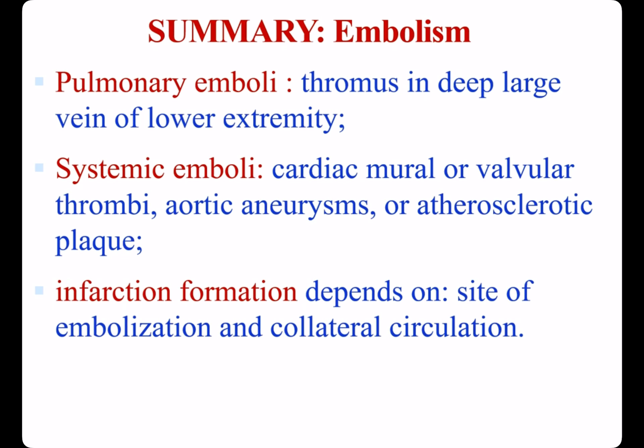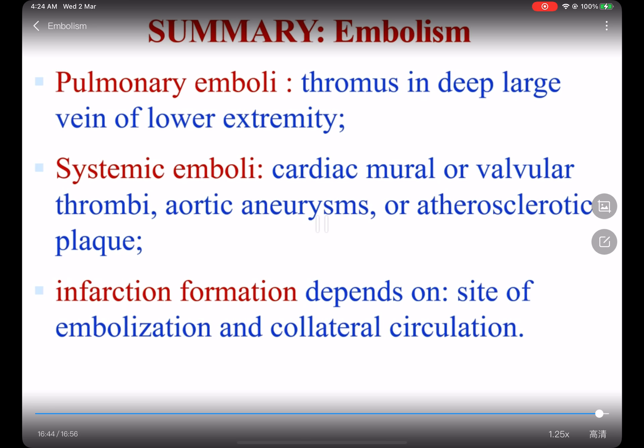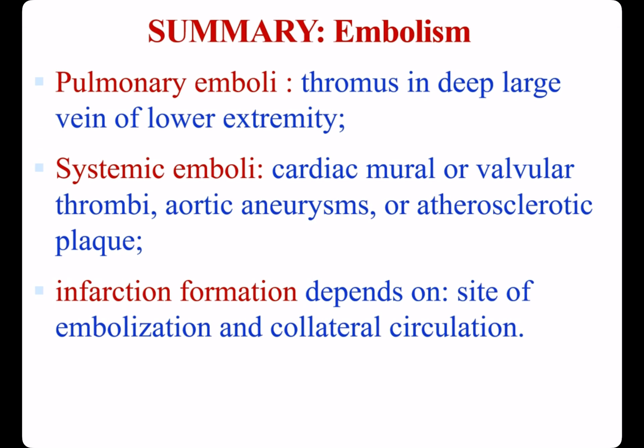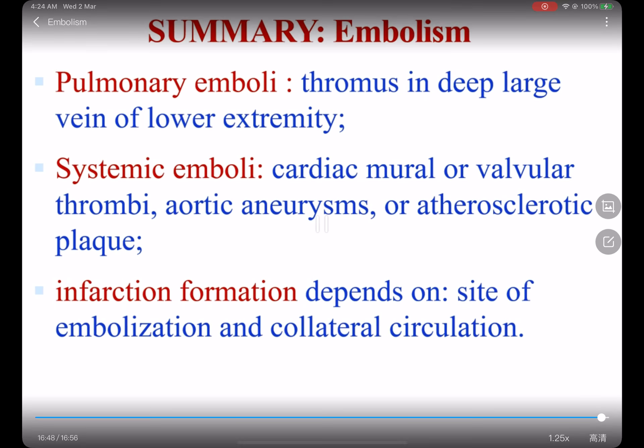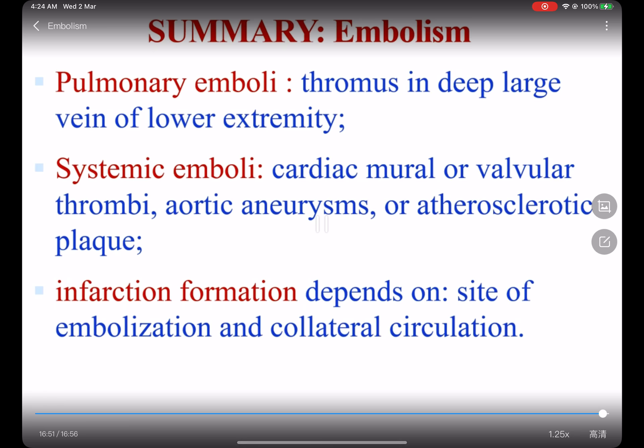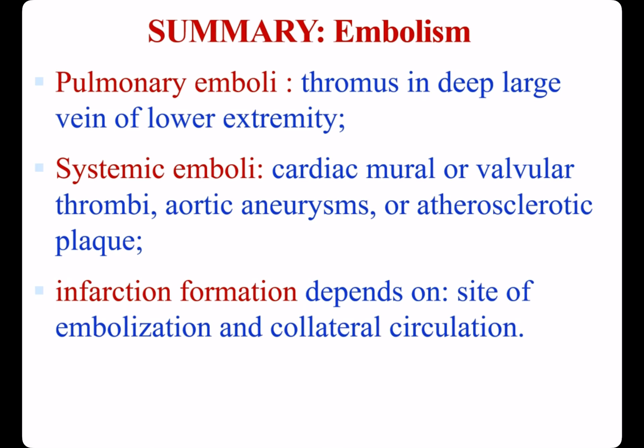Systemic emboli are derived primarily from cardiac mural or valvular thrombi, aortic aneurysms, or atherosclerotic plaques. Infarction — ischemic necrosis formation — depends on the site of embolization and collateral circulation.